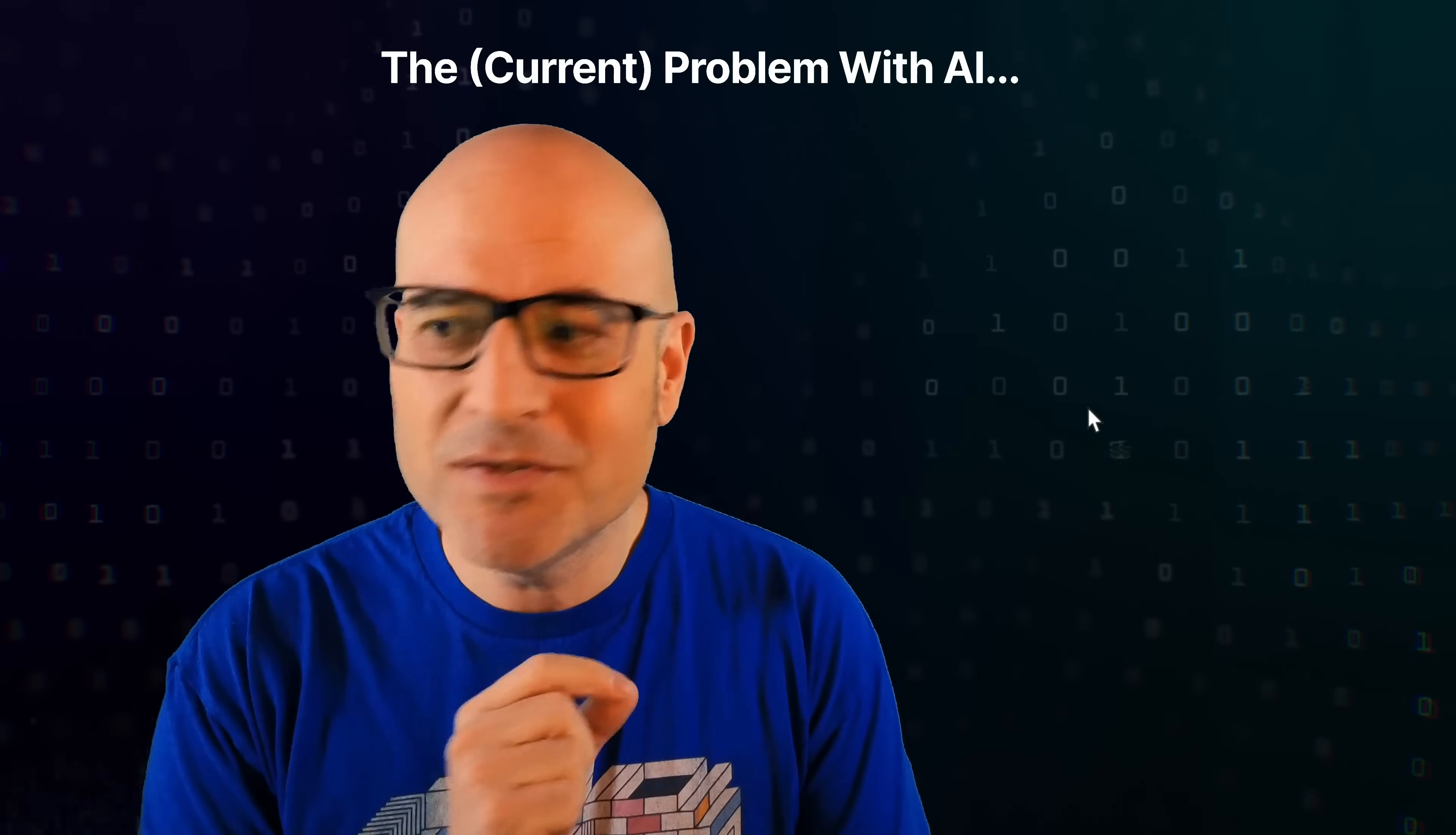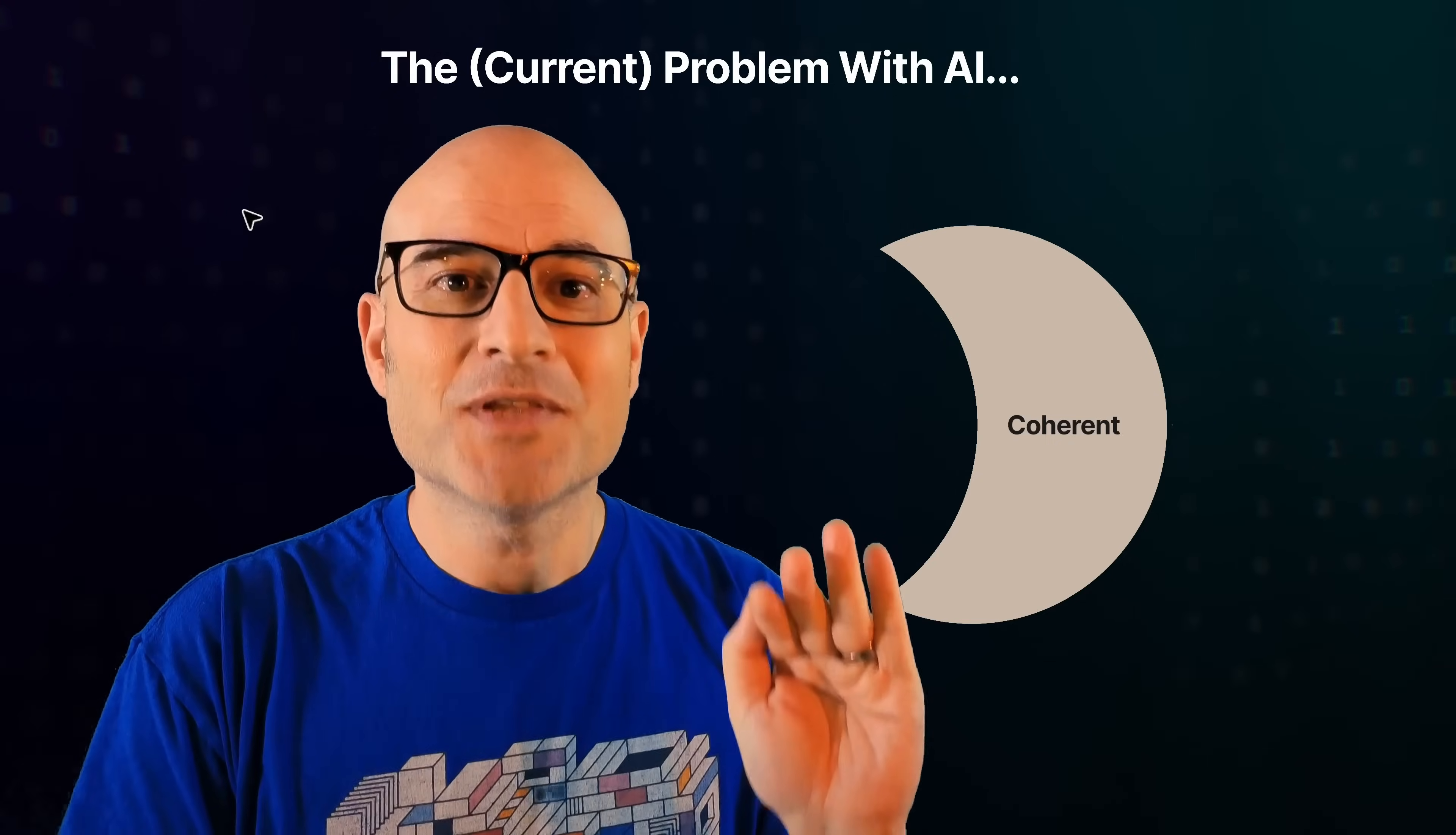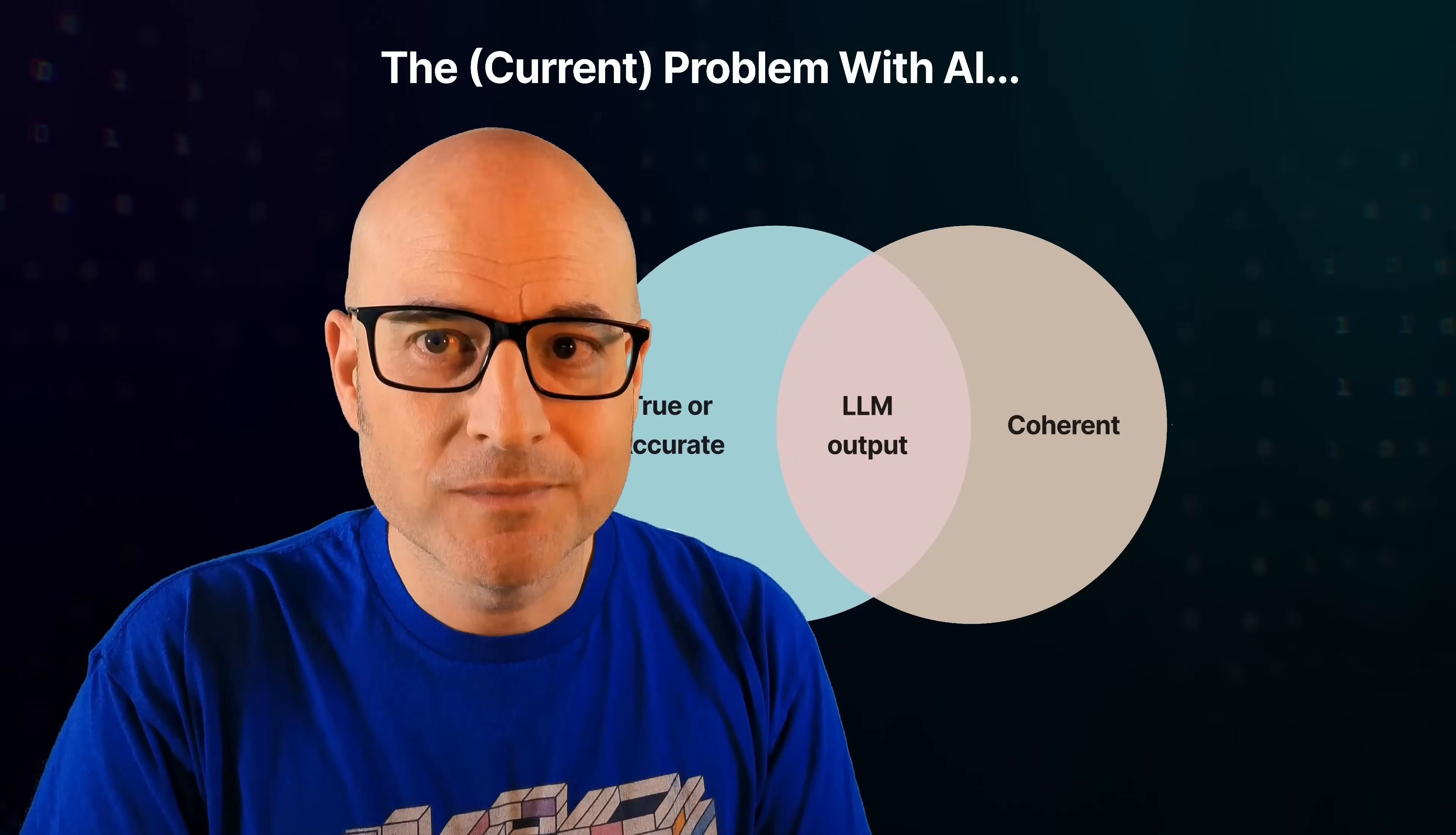So given that, what they're actually doing when they output something is they are creating coherence. They're creating a coherent response. So what they're actually creating is what they think you want to hear. What a lot of people think they are doing or want them to be doing is outputting something that is true or accurate.